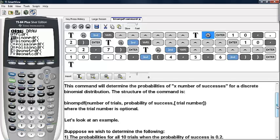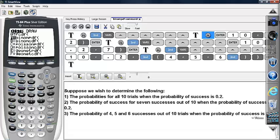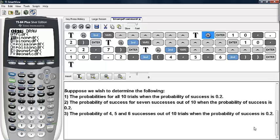Let's look at an example. Suppose we wish to determine the following: the probability for all 10 trials when the probability of success is 0.2, the probability of success for 7 successes out of 10 when the probability of success is 0.2, and the probability of 4, 5, and 6 successes out of 10 trials when the probability of success is 0.2.